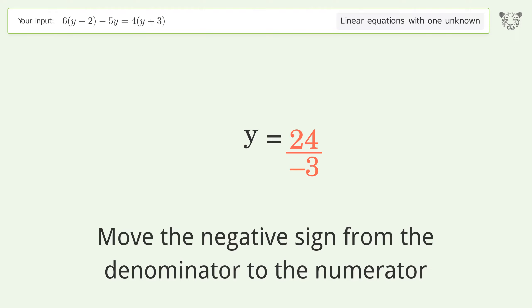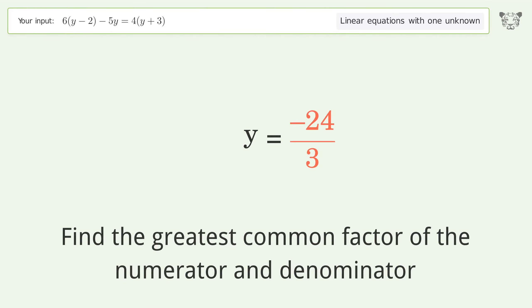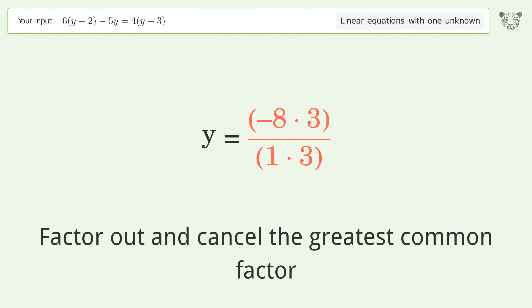Move the negative sign from the denominator to the numerator. Find the greatest common factor of the numerator and denominator. Factor out and cancel the greatest common factor.